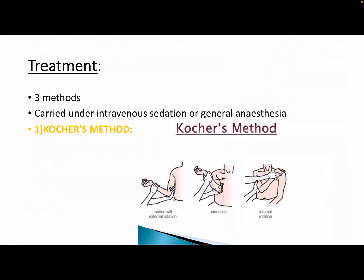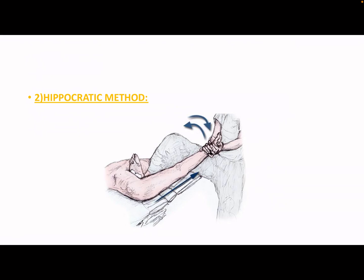To treat this shoulder injury, always remember this is done under sedation or under general anesthesia. The first method is Kocher's method, in which you remember the word TEAR - T-E-A-R. Traction - you apply traction and then externally rotate the arm. Then you bring it to the chest - this is adduction. Then you put the hand over onto the other shoulder - this is internal rotation. That is Kocher's method.